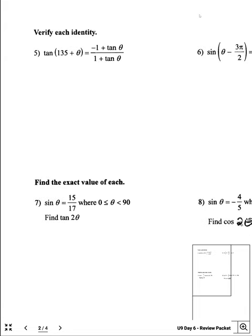On to the second page. For number 5, it says verify the identity. To do this, I've got tangent of two numbers added together, so I'll start by using the tangent addition identity: tangent of 135 degrees plus tangent of theta, divided by 1 minus tangent of 135 degrees times tangent of theta.